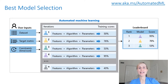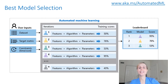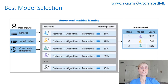Automated machine learning also helps you with the deployment process. You have two options: you can deploy the best model recommended according to the best metric criteria that you define, or you can deploy a specific model iteration from your experiment, just based on your own criteria.